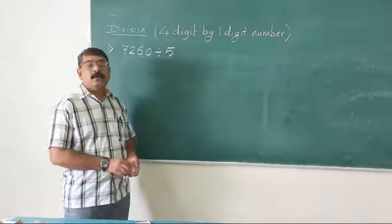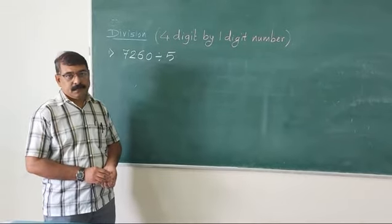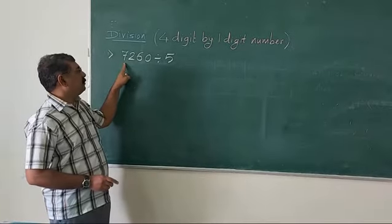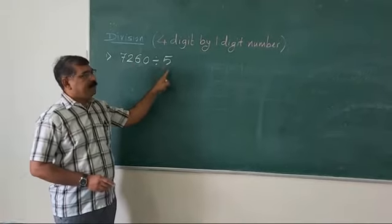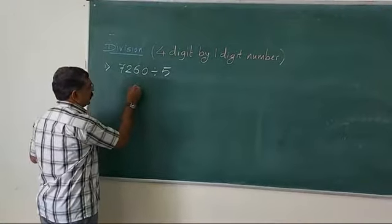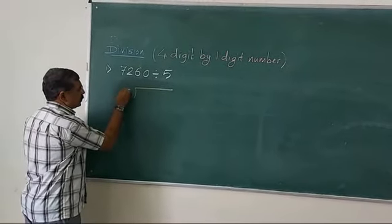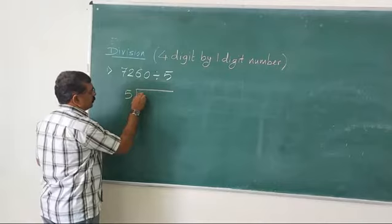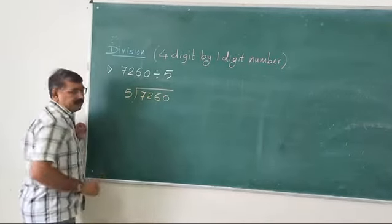I am Inanath. Today we are going for long division. The example is 7260 divided by 5. Here 5 is actually the divisor, whereas the number 7260 is the dividend.